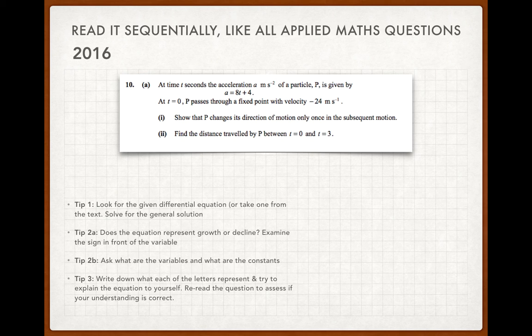Number two, I'll give you a hand with the first part. It says show p changes its direction of motion only once in the subsequent motion. So the velocity starts out as minus 24, the thing is accelerating, so it's getting faster. So if the velocity is negative, it means it's going in a negative direction, let's say it's left. So it's going left with a speed of minus 24, it accelerates, which means the velocity increases, so minus 24, minus 23, minus 22, down to zero. And then when it hits zero, we now have a positive velocity, so it changes direction.